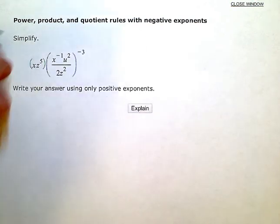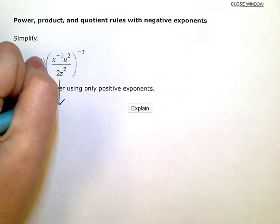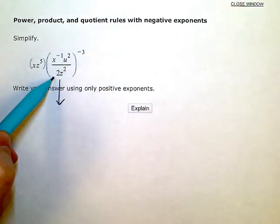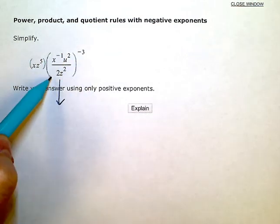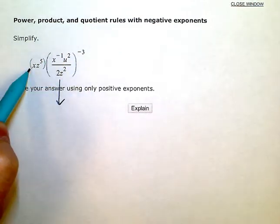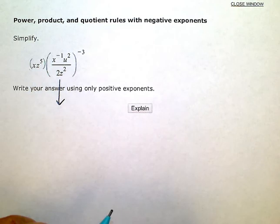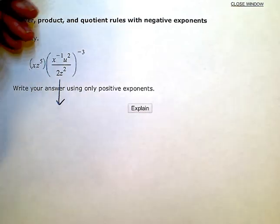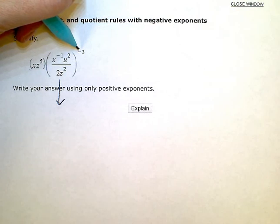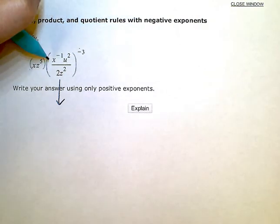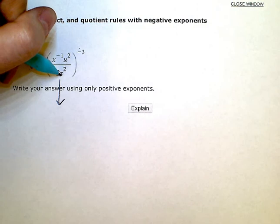So what I'm going to do first, since this parenthesis is the more complicated of the two, I'm going to work on this by itself for a second before I try to multiply this in. So the first thing I'm going to do is apply this exponent of negative 3 using the power rule to every factor inside the parenthesis.